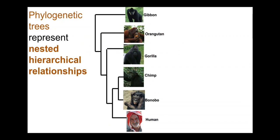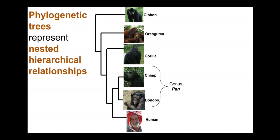We will use primates — apes in particular — as a case study here. Phylogenetic trees represent nested hierarchical relationships. They can take a fair bit of space to draw out, particularly when you add nice pictures of all the organisms. So Newick notation is a way of representing them in a more compact structure.